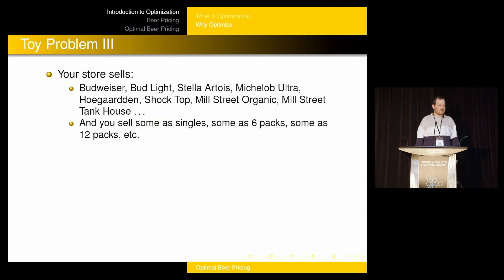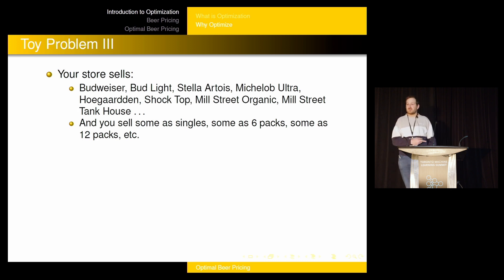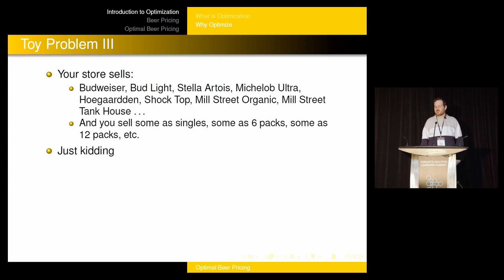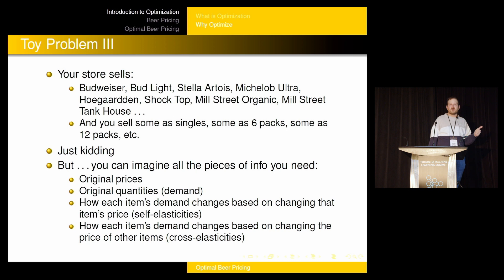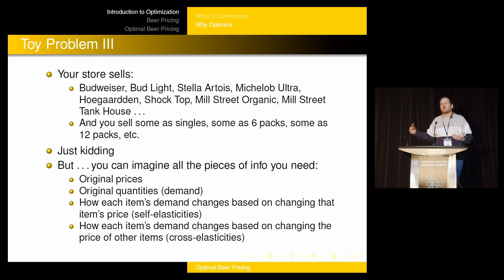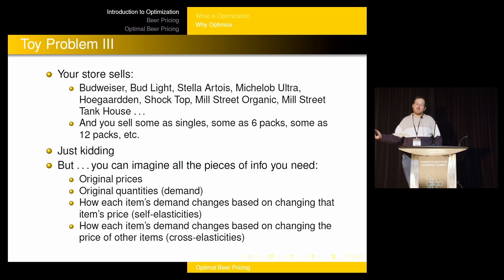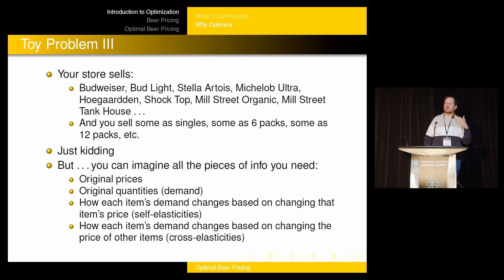Let's step it up one more time. Now your store sells Budweiser, Bud Light, Stella Artois, Michelob Ultra, Hoegaarden, Shock Top, Mill Street, Organic Mill Street Tankhouse, and more — in 6-packs, 12-packs, and singles. You're going to need a lot of data: all the initial prices, volumes, self-elasticities, and something you haven't seen yet — cross-elasticity. Whenever I change the price of one item, the demand for that product might change, but so might the demand for other products. If I raise the price of Budweiser, demand for Stella Artois might increase because people switch. When you have this kind of problem with lots of products, it's really hard for a human to make these decisions optimally — and that's where you want software involved.